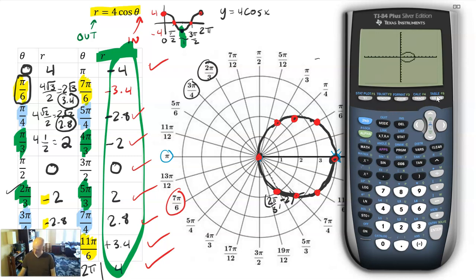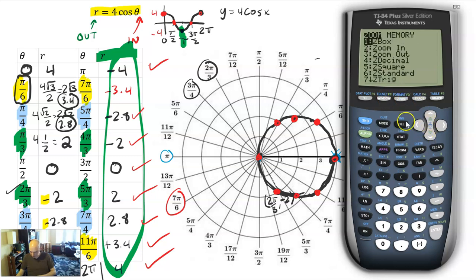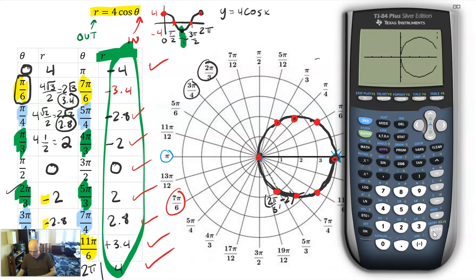Hit Graph and you'll see an ugly-looking shape. Your calculator isn't very good at graphing polar equations — polar equations are often circles, but the calculator doesn't have the pixels to deal with it. The default window is rectangular, not square, so the scale is off and this looks like a squished egg. You can zoom square to help a little, but it still kind of looks like a weird octagon. It's really better for you to graph by hand anyway.